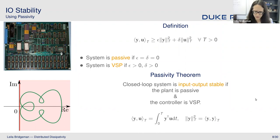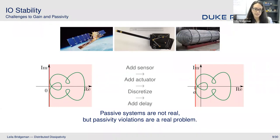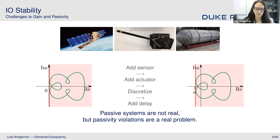Passivity is pretty useful and good for design, but it can't really be used everywhere. In reality we have sensor noise, actuator noise, discretizations, and delay. Although passivity can give us enormous amounts of robustness to parametric uncertainty, it doesn't give us any robustness to some of these. Even an infinitesimal delay will cause a passivity violation. So in some sense, although passive systems are real, passivity violations are a real problem.